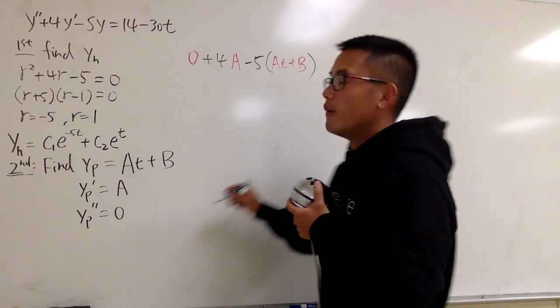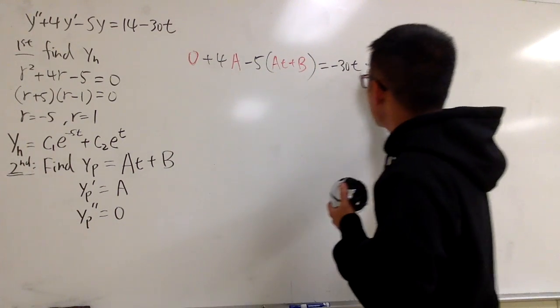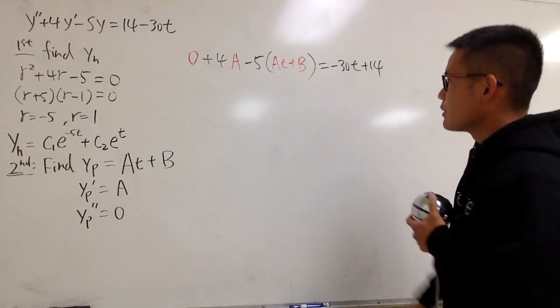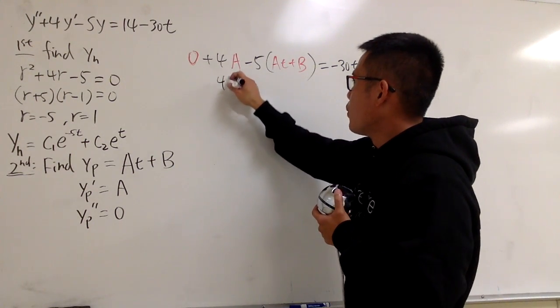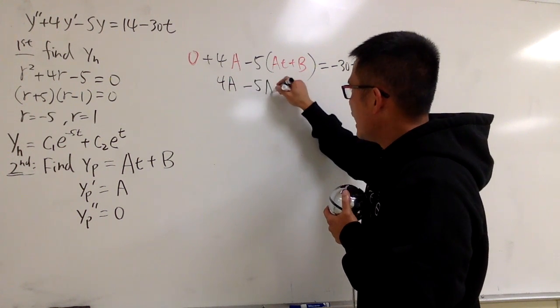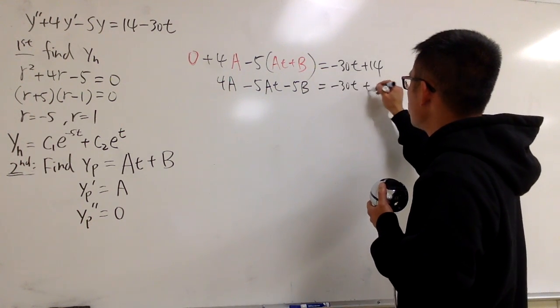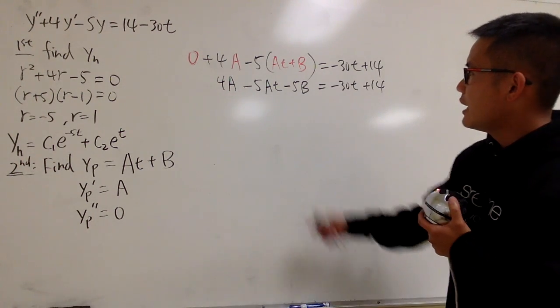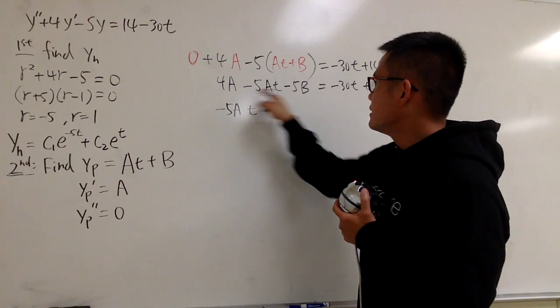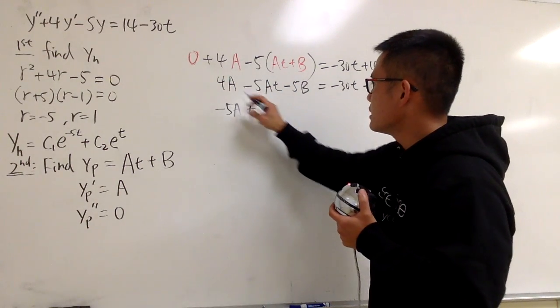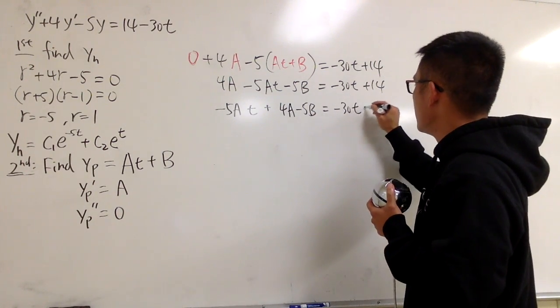And I have to make this equal to, let me just write down the negative 30t first. And then we have the 14, plus 14. Right now, combine like terms and things like that, and then equal coefficients. This is zero, so it doesn't matter, this right here is just 4A, and this times that is minus 5At, and this times that is minus 5B, and it's still equal to negative 30t plus 14.